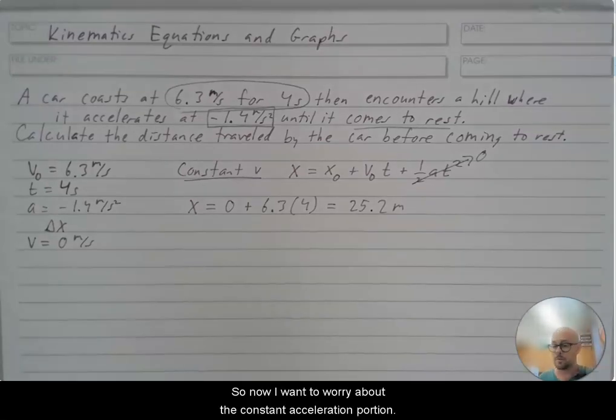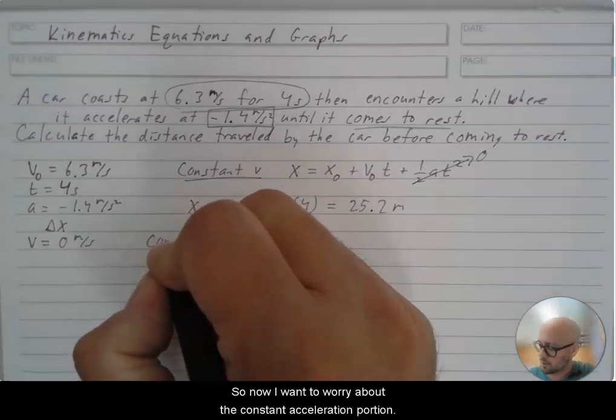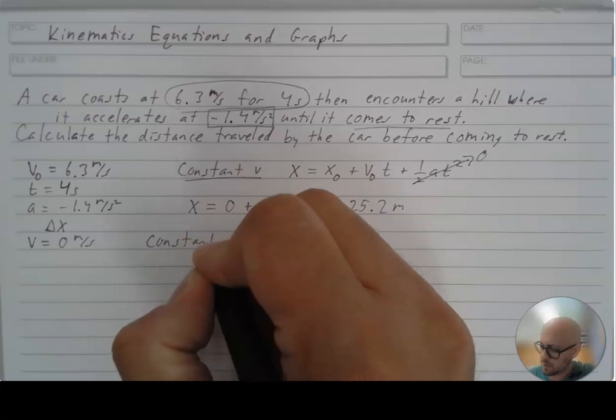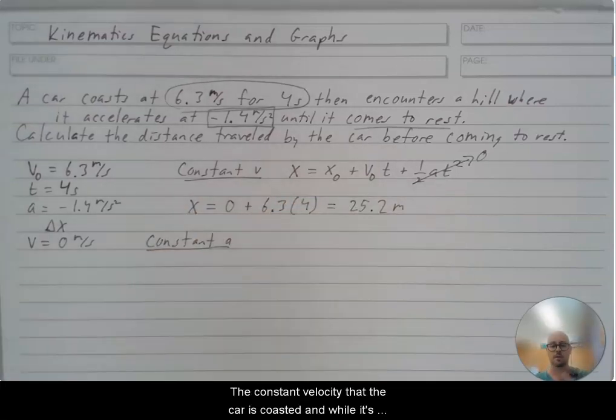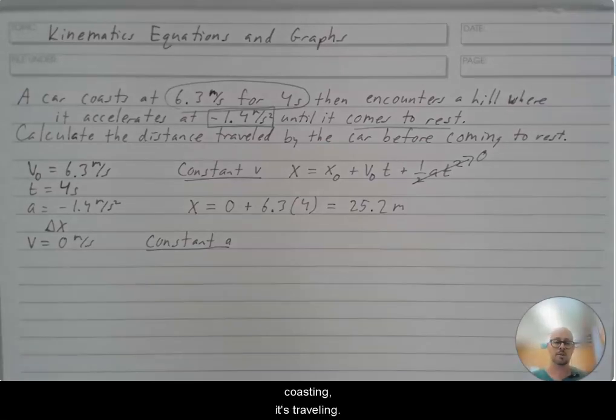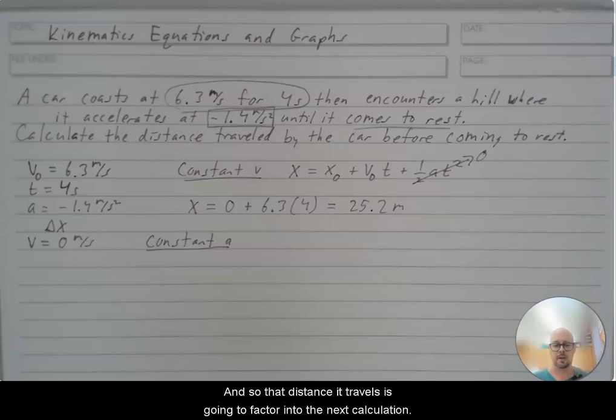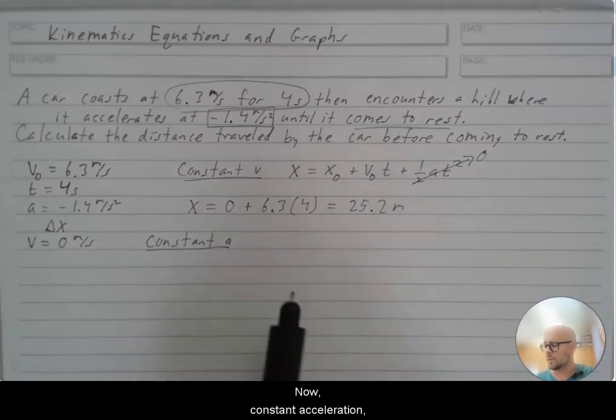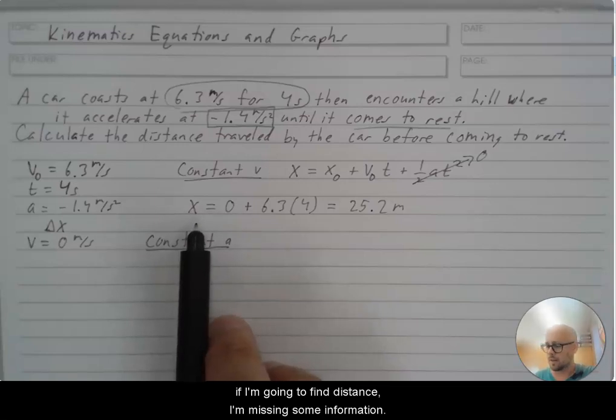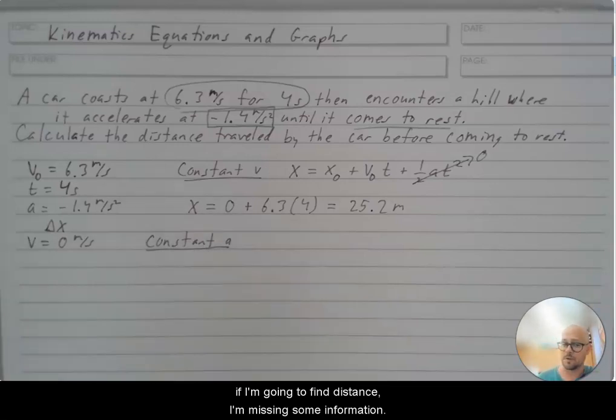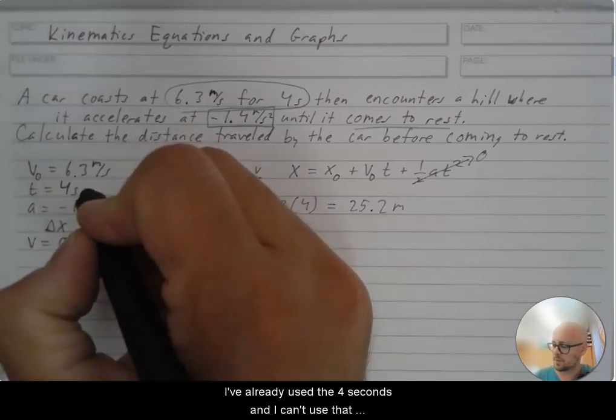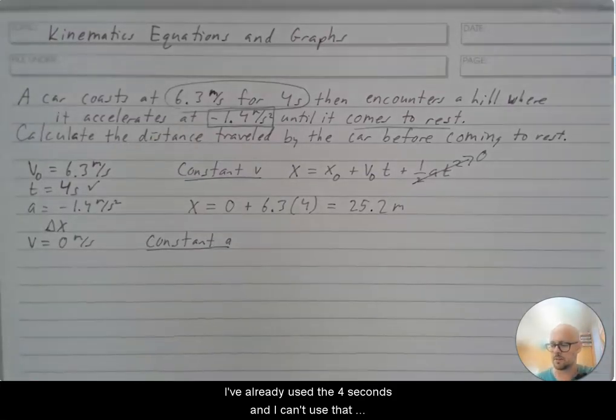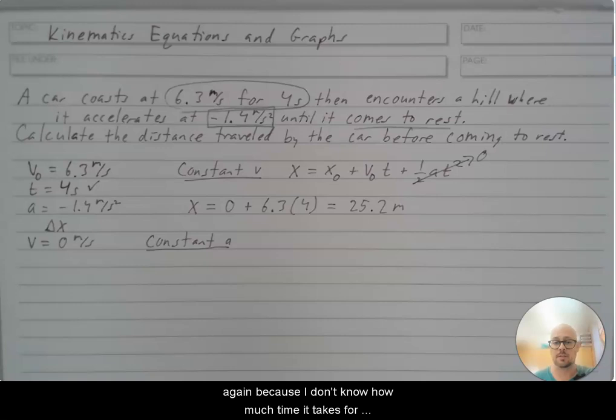So now I want to worry about the constant acceleration portion. So that's already happened. The constant velocity, the car is coasted. And while it's coasting, it's traveling. And so that distance it travels is going to factor into the next calculation. Now constant acceleration, if I'm going to find distance, I'm missing some information. I've already used the four seconds. But I can't use that again because I don't know how much time it takes for this car to stop.